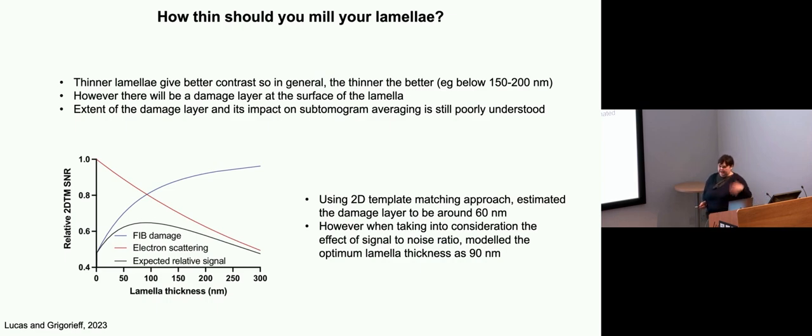Versus 60 nanometer damage layer proposed by this paper from the Tegunov lab. I think at the moment it's still not clear the exact extent of this damage layer and how it will impact the subtomogram averaging. But in this paper that was published this year, this was done as an indirect measurement. They used their 2D template matching approach on images, not tomograms, and used the cross correlation scores to correlate whereabouts in the lamella and saw a drop off below 60 nanometers. So proposed that there was a 60 nanometer damage layer, which means that if your lamella is less than 120, theoretically the whole thing would be damaged.